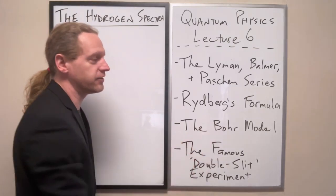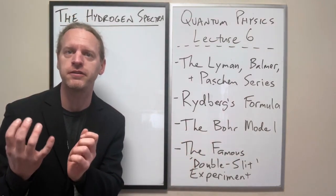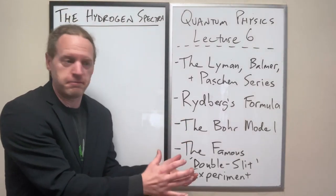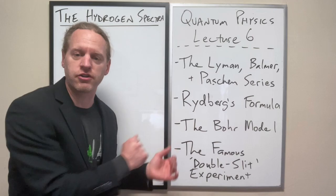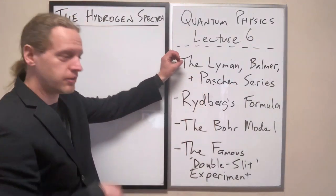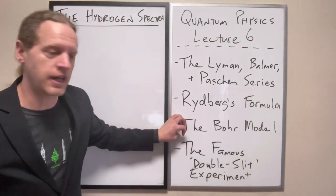Bohr took that and said if hydrogen gives off these certain energies, that is directly related to the energies of the electron within a hydrogen atom. He connected the emission lines or emission photons of hydrogen to how the hydrogen atom works.